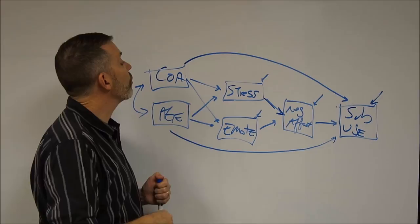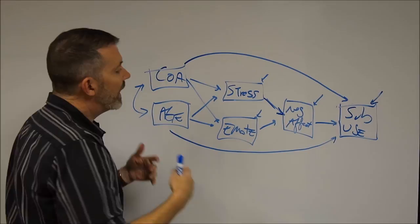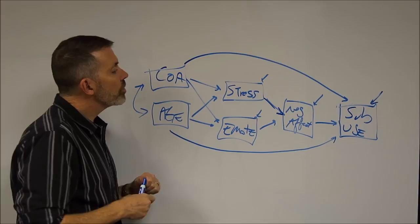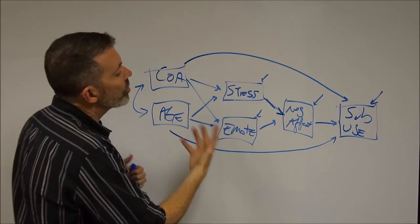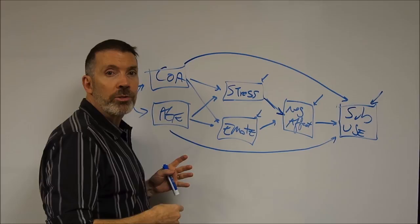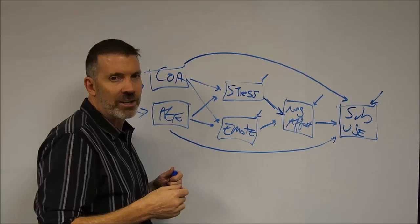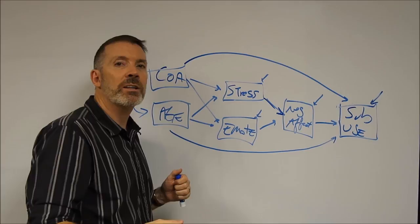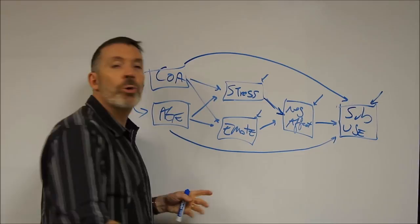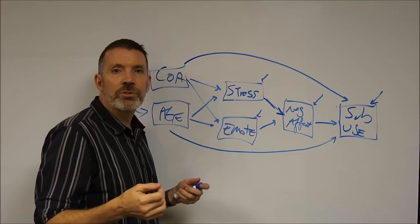Let's say we consult these modification indices, add those parameters, and now have an adequately fitting model. What do we do next? We may stop here, and depending on your goals, we can say we have a more subtly nuanced understanding of how these factors relate to one another over the multiple regression. Going back, the regression was asking: what is the effect of stress on substance use above and beyond all other predictors? Here, we have a very different insight — COA affects stress, which in turn affects negative affect. We might also want to do a formal test of what's called mediation.